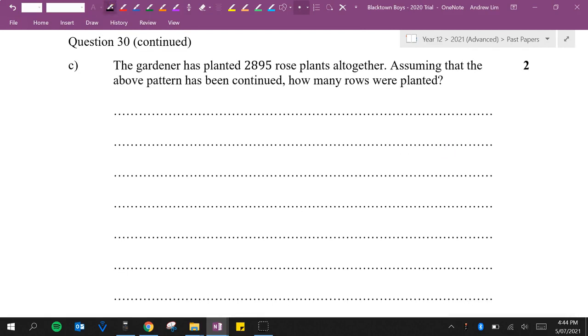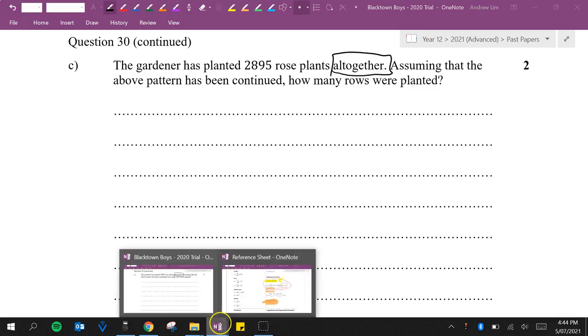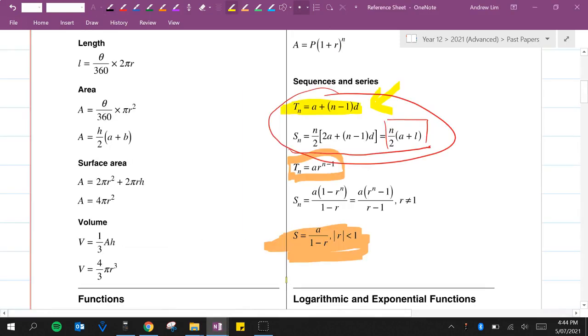Part C. The gardener has planted 2895 rose plants altogether. Assuming that the above pattern has been continued, how many rows were planted? So this tells us the word altogether means it's a sum. So I'm going to go back to my formula sheet. I'm going to be using one of these.